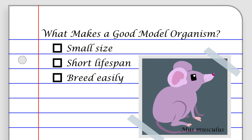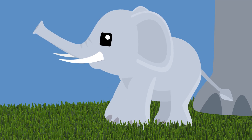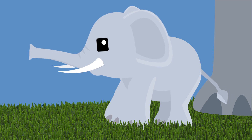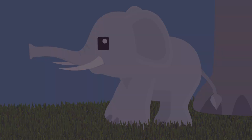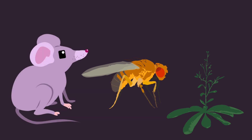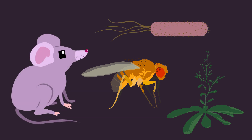Model organisms can be chosen for a variety of reasons. Typically, they need to be small, live short lives, and be bred easily — you couldn't easily conduct an experiment on 100 elephants. Commonly used model organisms include fruit flies, arabidopsis, mice, and E. coli.